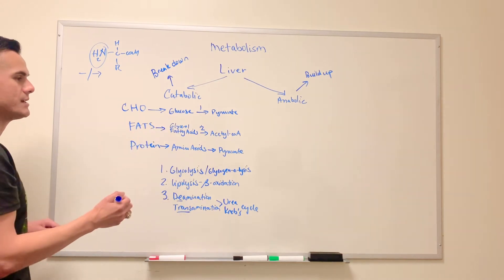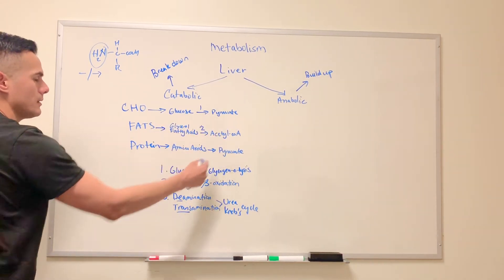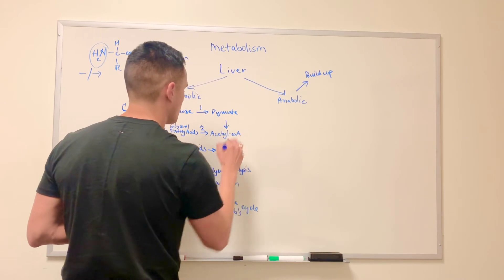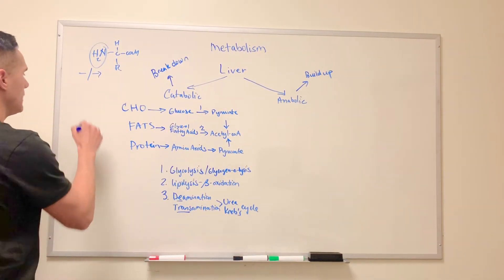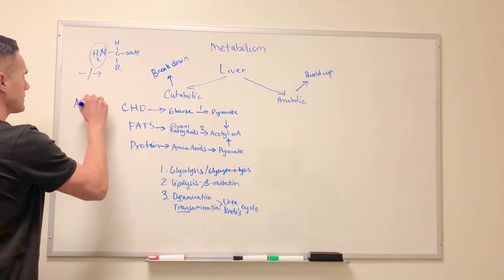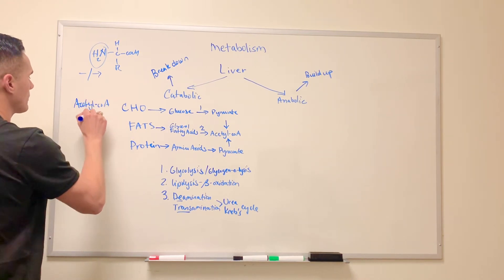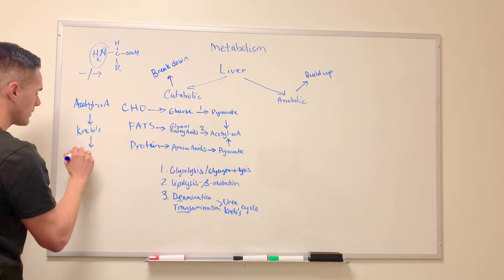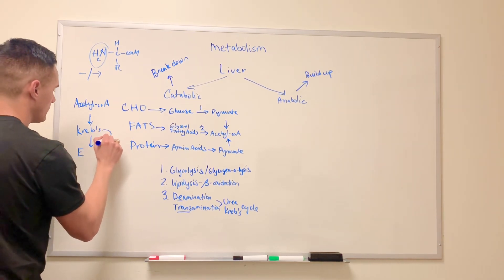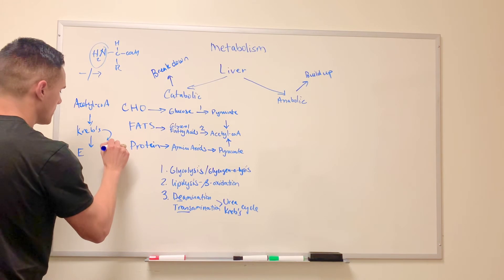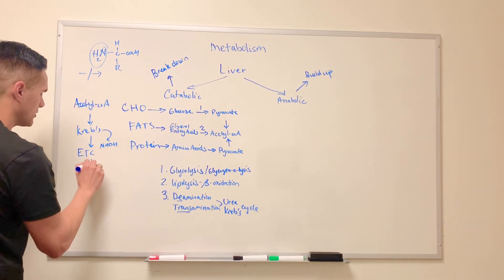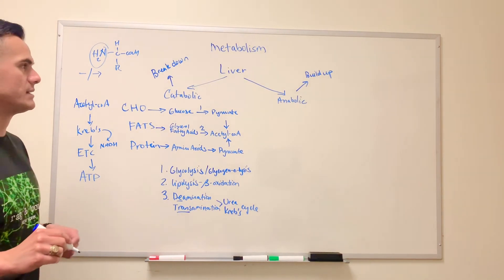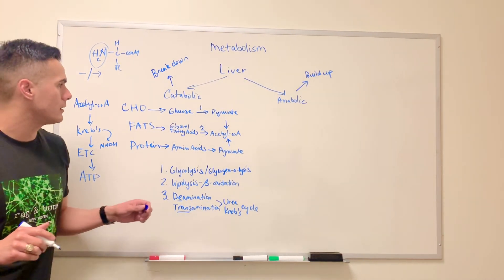And so as you can see here, we can use pyruvate in order to make acetyl-CoA. And then what acetyl-CoA does is it gets fed into the Krebs cycle. And then we get our NADH, which is then used in the electron transport chain, and then produce our highest yield of ATP.